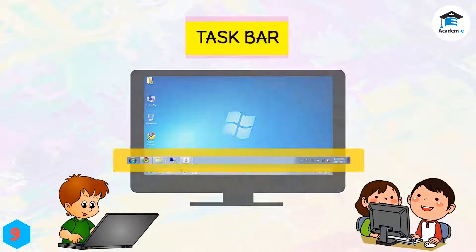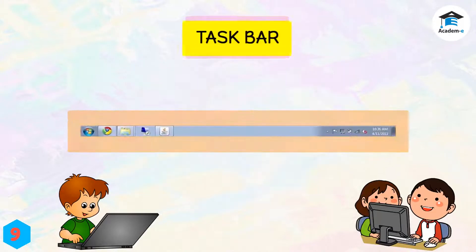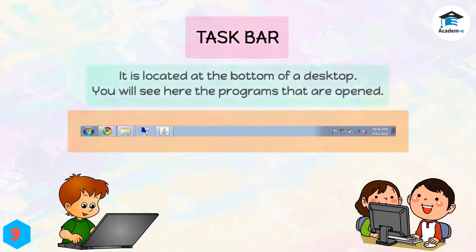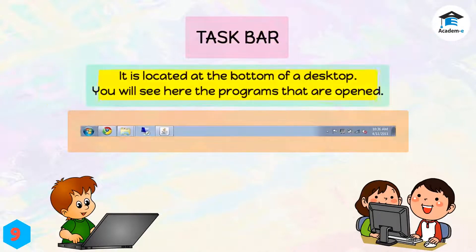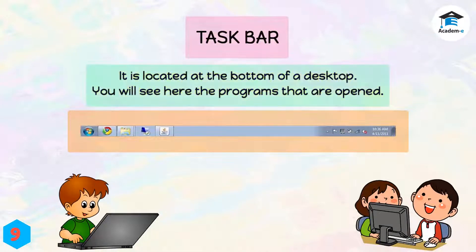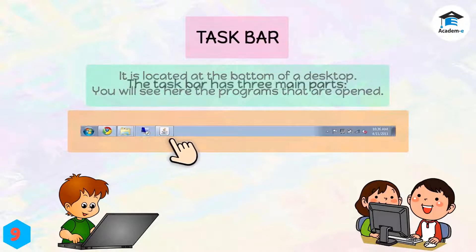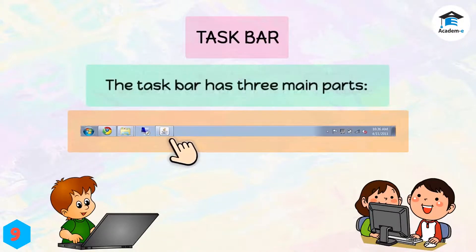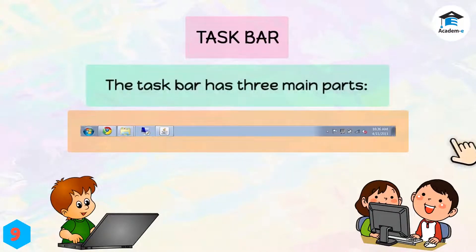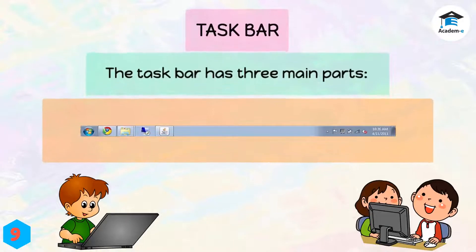Taskbar. It is located at the bottom of the desktop. You will see here the programs that are opened. The taskbar has three main parts.